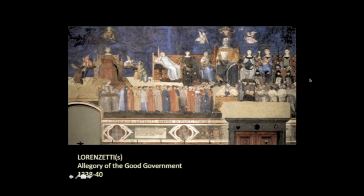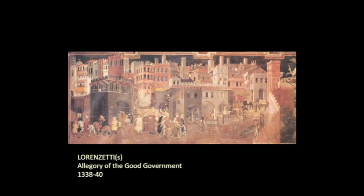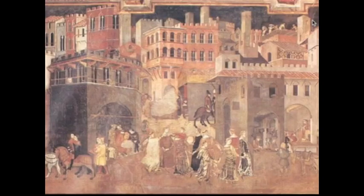We have allegorical figures of Justice, Prudence, and Temperance overseeing the citizens under good government — orderly and prosperous. Their town looks not different from San Gimignano: crenellated, with many towers, and prospering like crazy. One of the most interesting details is on the roofscape — these people are repairing the roof. That's good government: you take care of things.